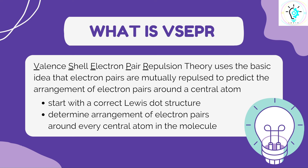VSEPR, or Valence Shell Electron Pair Repulsion theory, uses the basic idea that electron pairs are repulsed to predict the arrangement of the electron pairs around a central atom. To determine the VSEPR of a particular molecule, we start with the Lewis dot structure for that molecule, then we determine the arrangement of electron pairs around every central atom in that molecule.